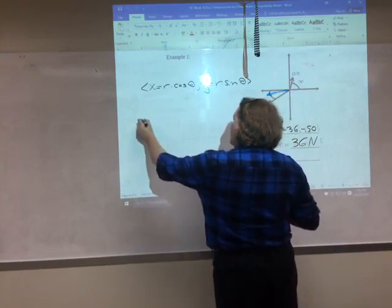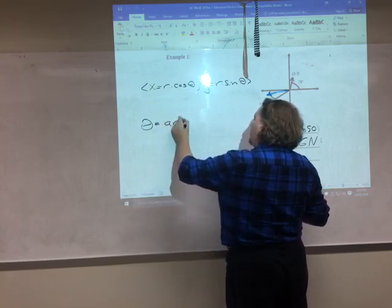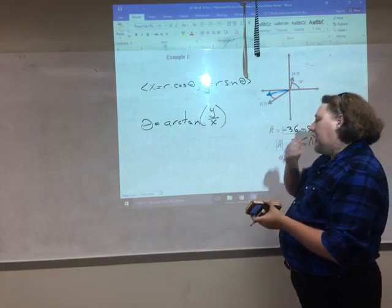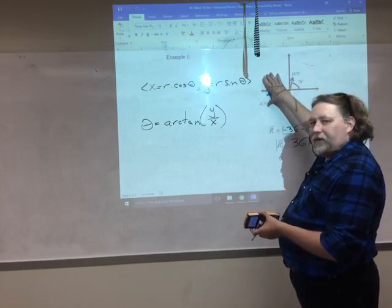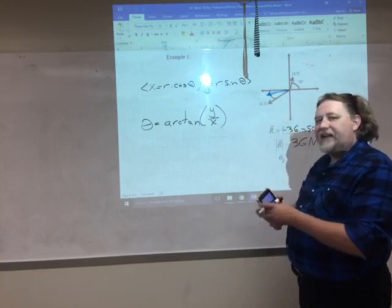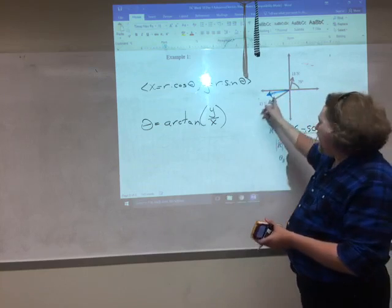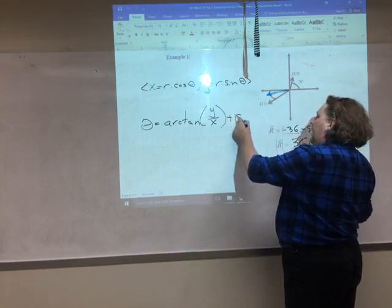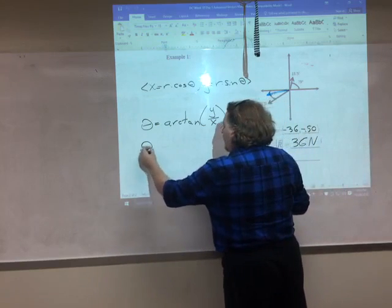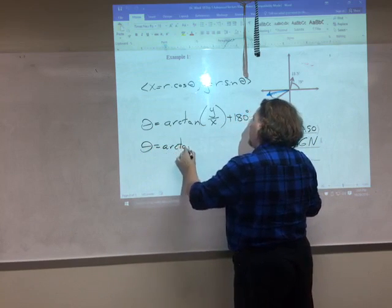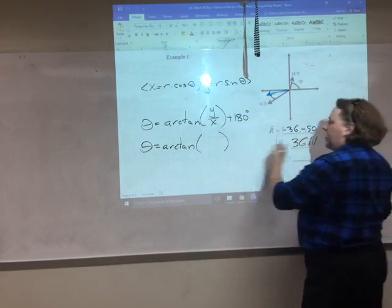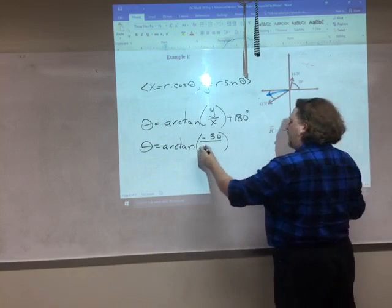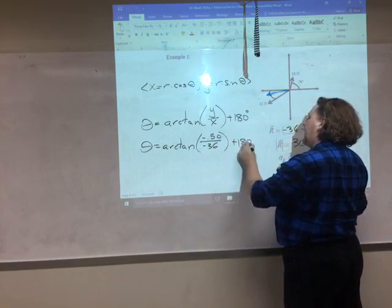the angle is the arctangent of Y over X. And if my vector is on the left, quadrant 2 or 3, I need to add 180 degrees. If I look at my picture, my vector is indeed in quadrant 3, so I'm going to add 180 degrees to that. So my angle is the arctangent of Y, which is negative 0.5, over X, which is negative 36, add 180 degrees.